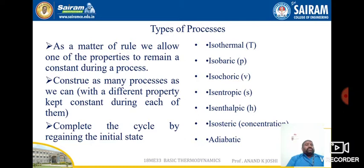Isochoric means there is no change in volume. Since there is no change in volume, no work is done — this is the isochoric process, where volume remains constant. The isentropic process is one where entropy remains constant. The isenthalpic process, also called the throttling process, has no change in enthalpy — h1 equals h2. Similarly, when concentration remains the same, it is called an isotopic process.